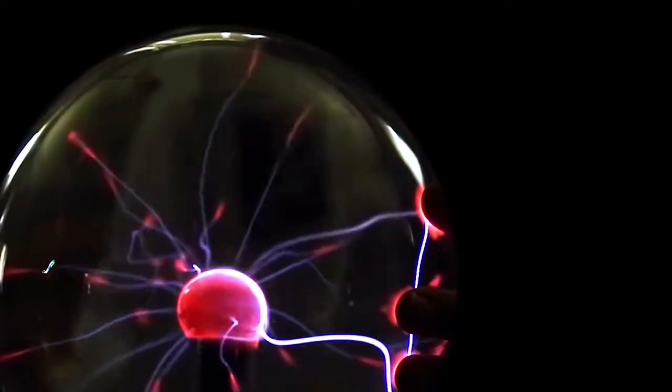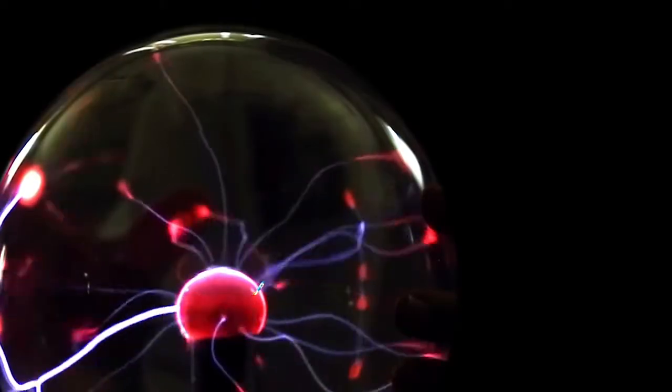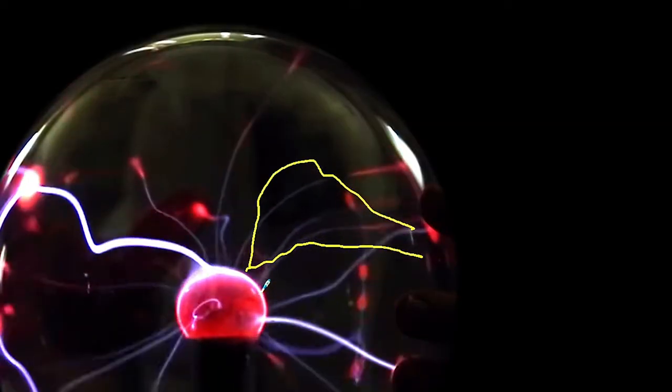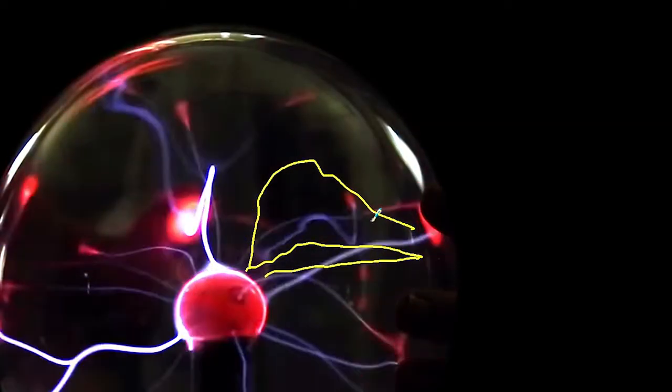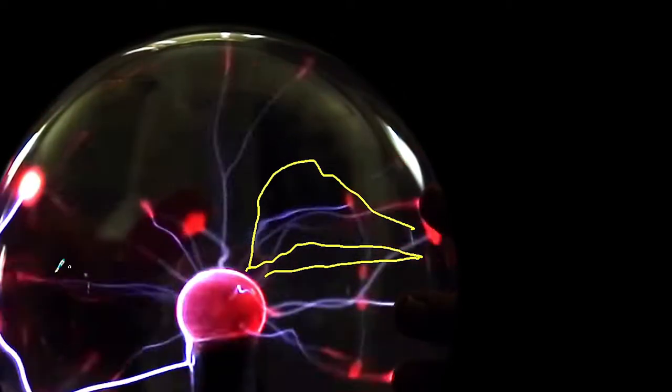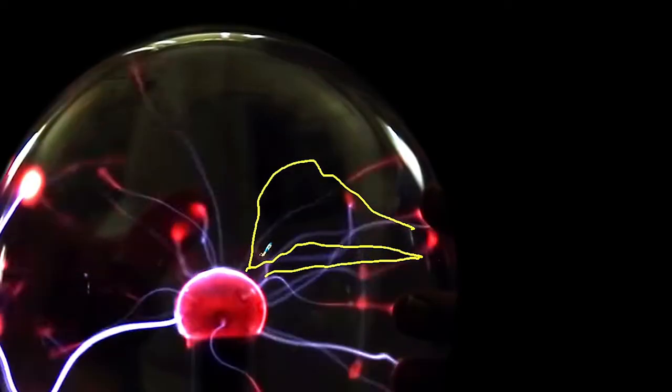So here I'm touching at the side. And do you notice how the streams arc to my fingers, but then they rise up like this and break and come back to this position over here. Why? Now the thing is, is that these streams are hot. And as you are aware, hot air rises.